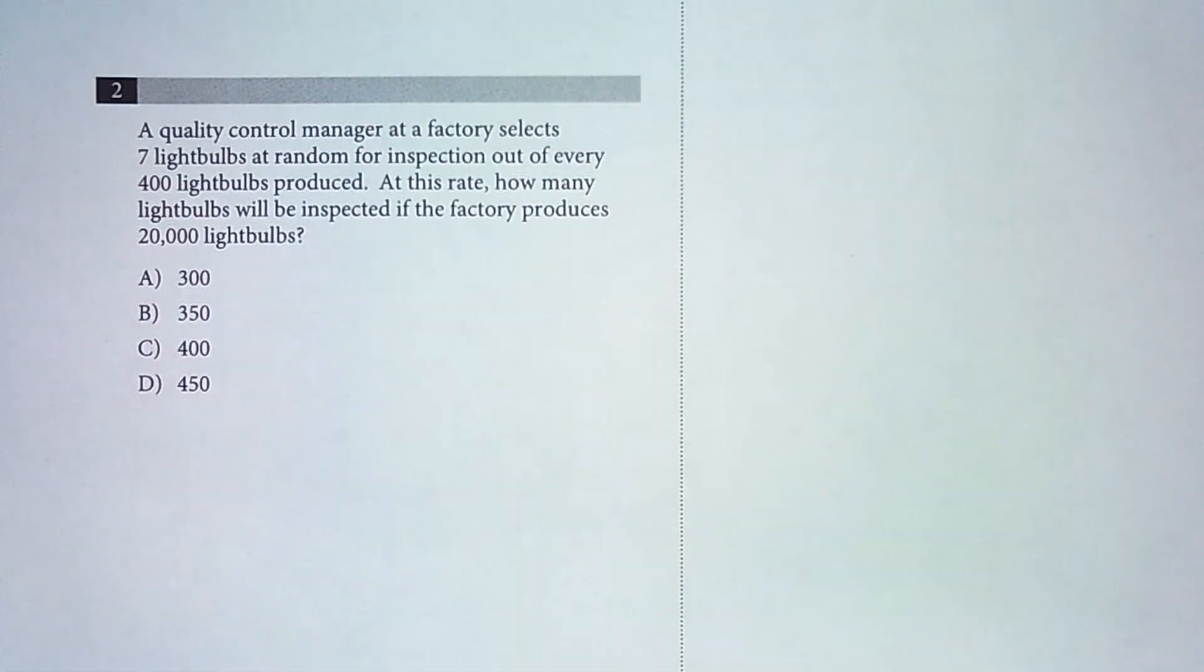Hey everybody, for today's problem of the day we are on a calculator test. A quality control manager at a factory selects seven light bulbs at random for inspection out of every 400 light bulbs produced.